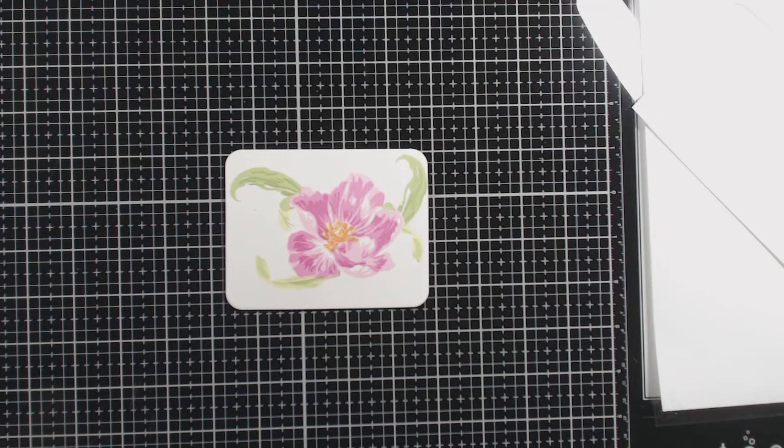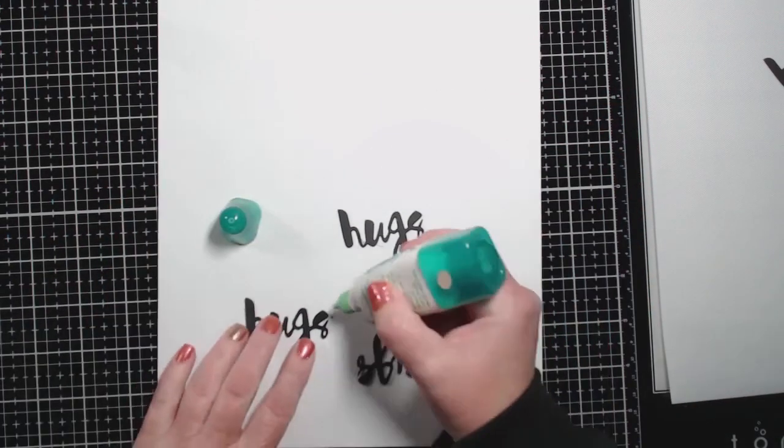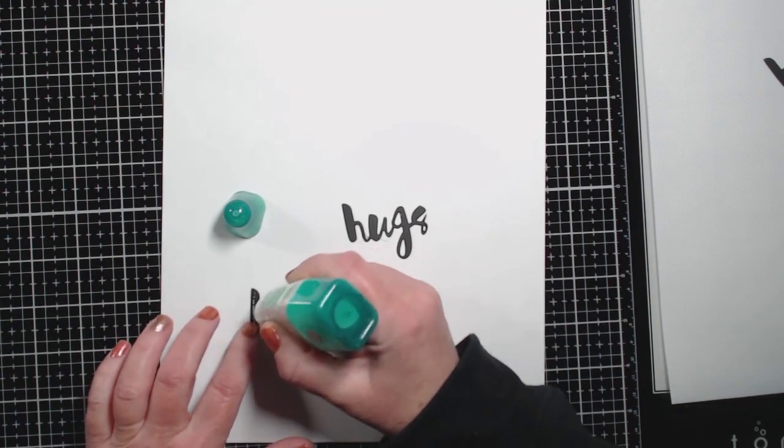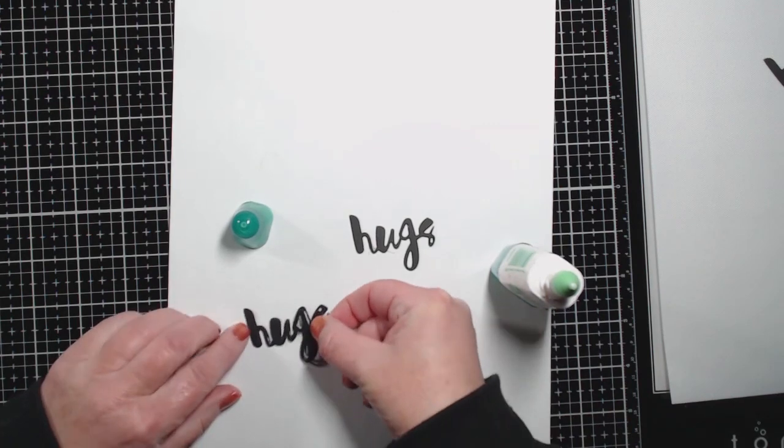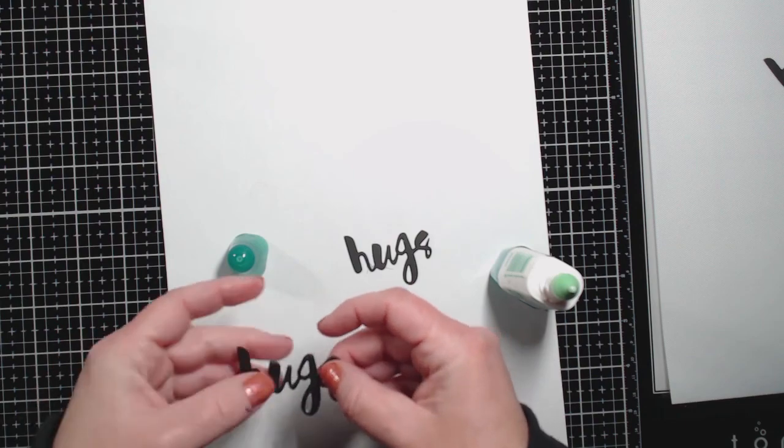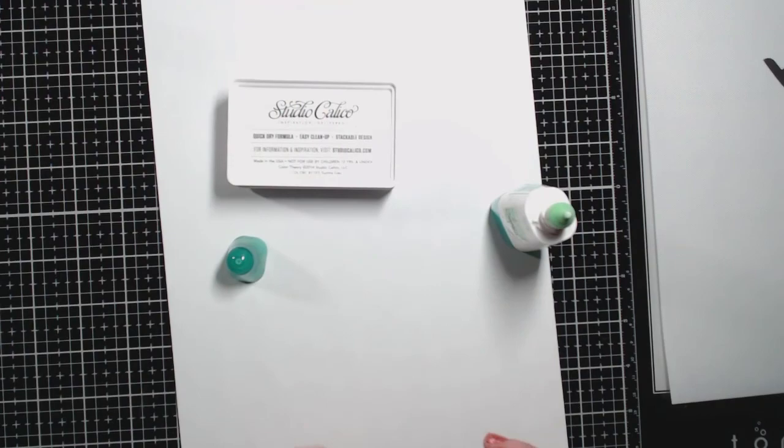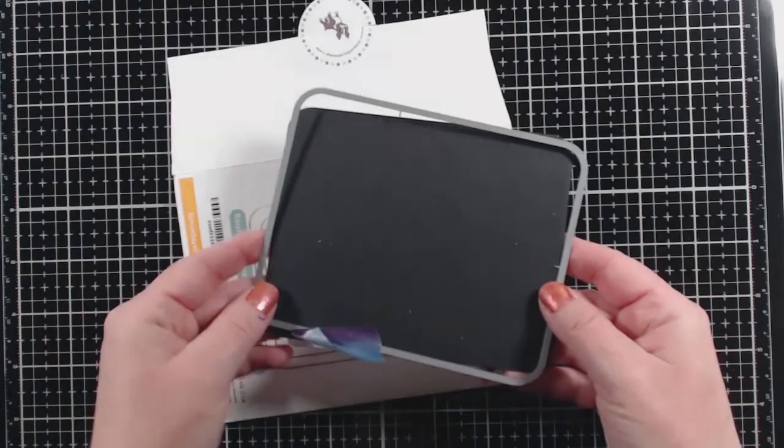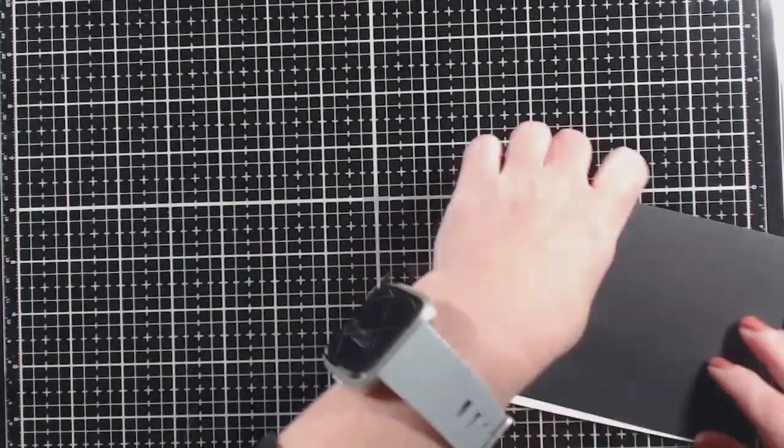That's the final card image. I'm going to take these three hugs dies. I'm going to glue them together just to give them a little bit of oomph. Then I'll be gluing those to the card. I really like this die. I love this font. And I think hugs can be used for so many different occasions.